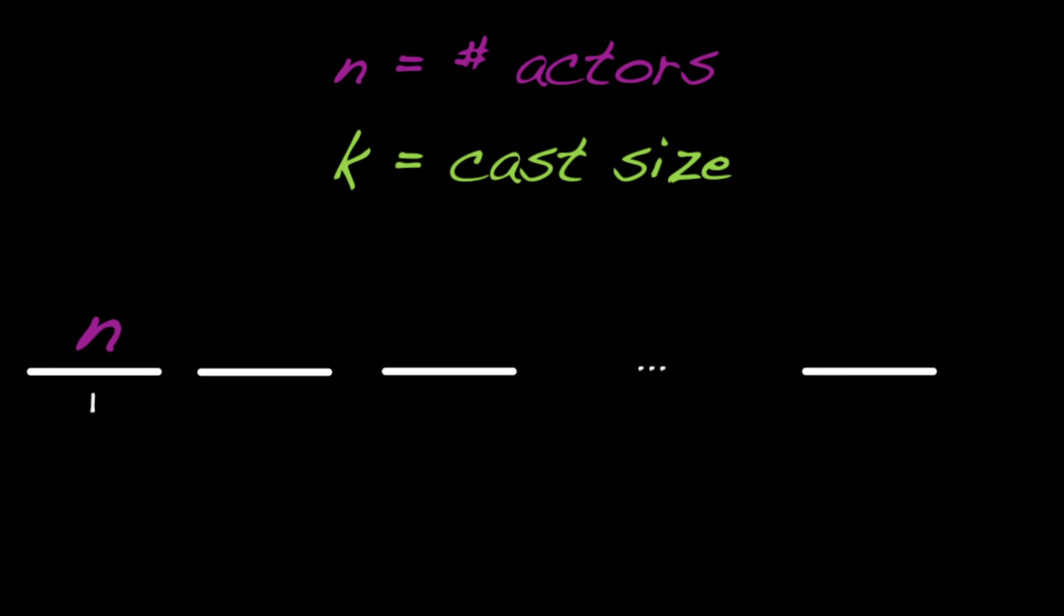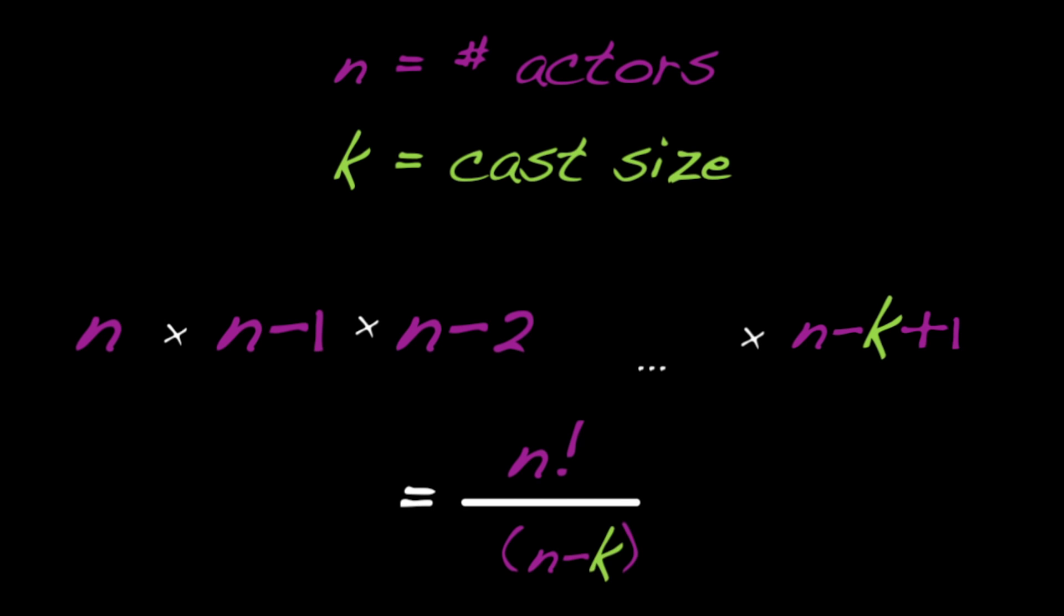On the first pick, we have n choices. Then on the second pick, we have n minus 1 choices, and so on. Notice that the number being subtracted is 1 less than the choice number. So on the kth choice, you have n minus k minus 1 choices, which is n minus k plus 1. Multiplying the choices together gives n times n minus 1 through n minus k plus 1, which can be written as n factorial over n minus k factorial.